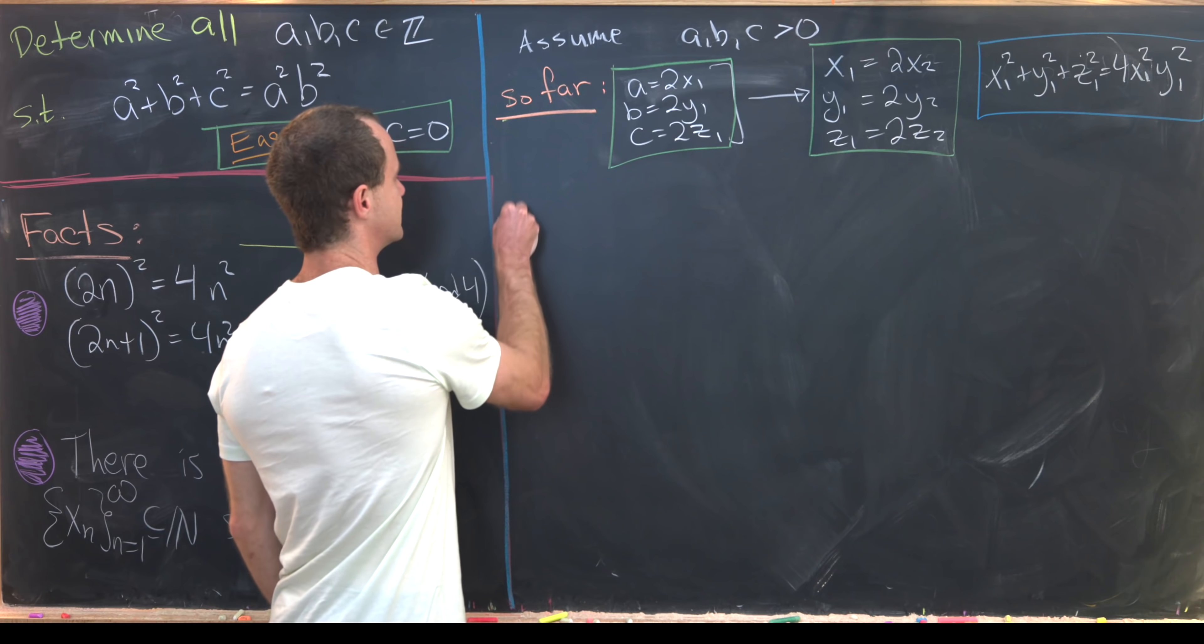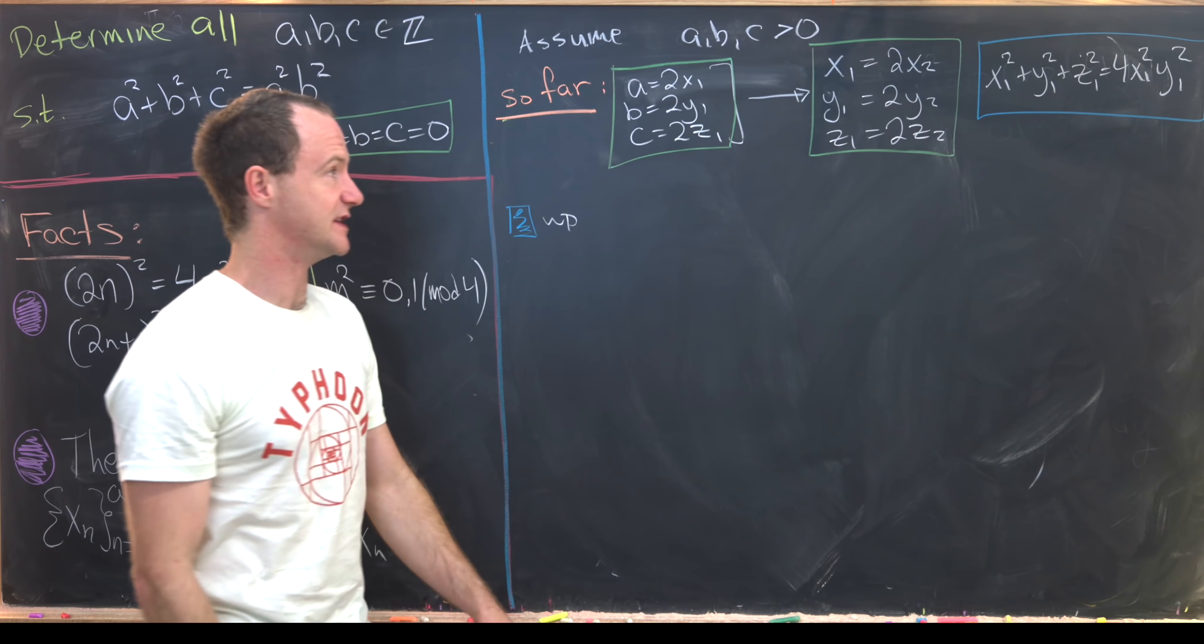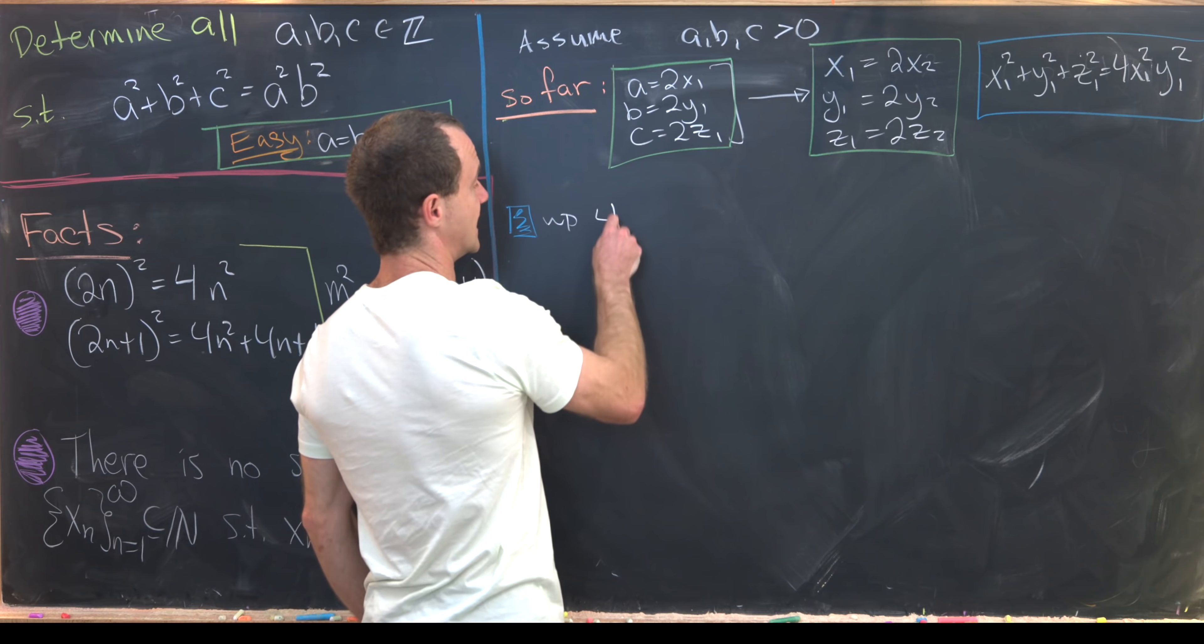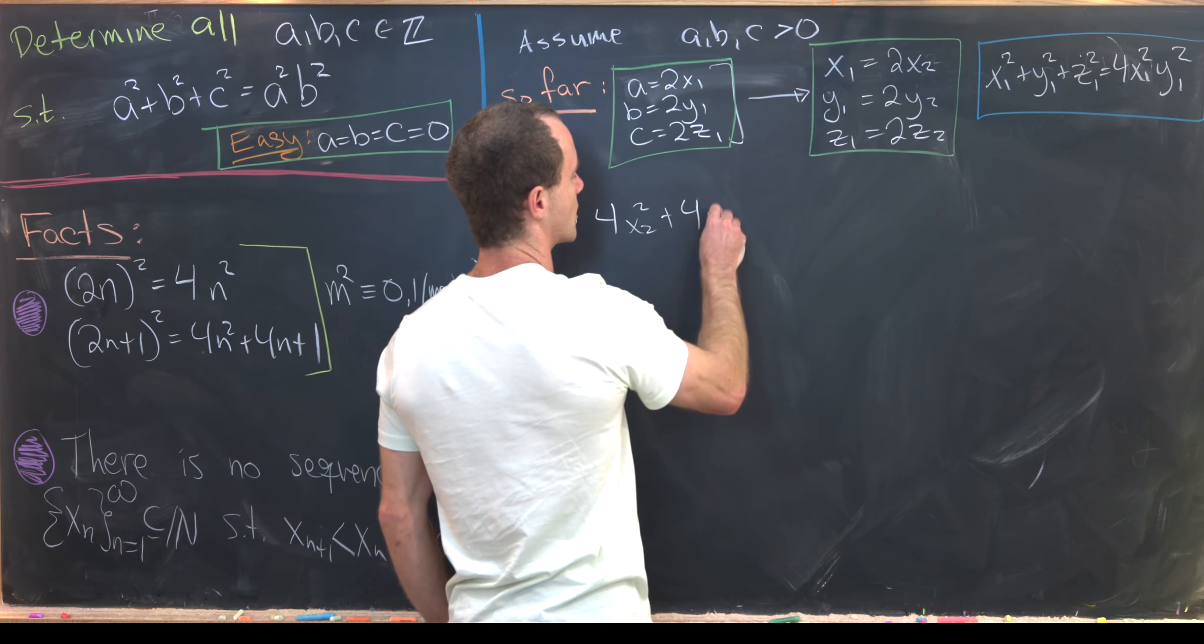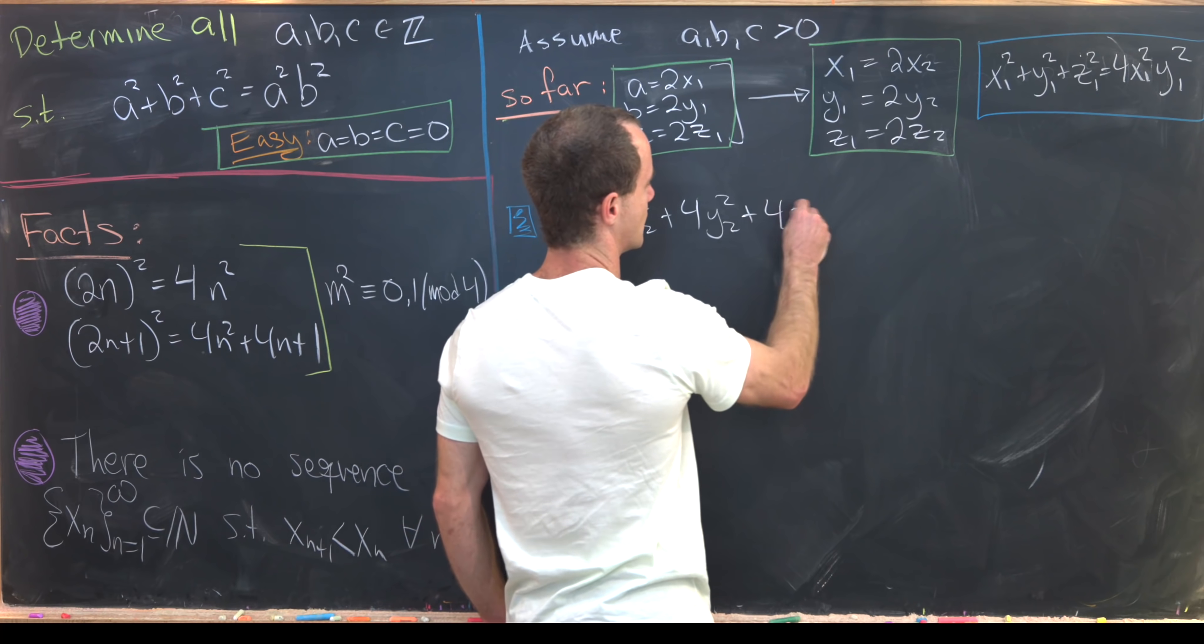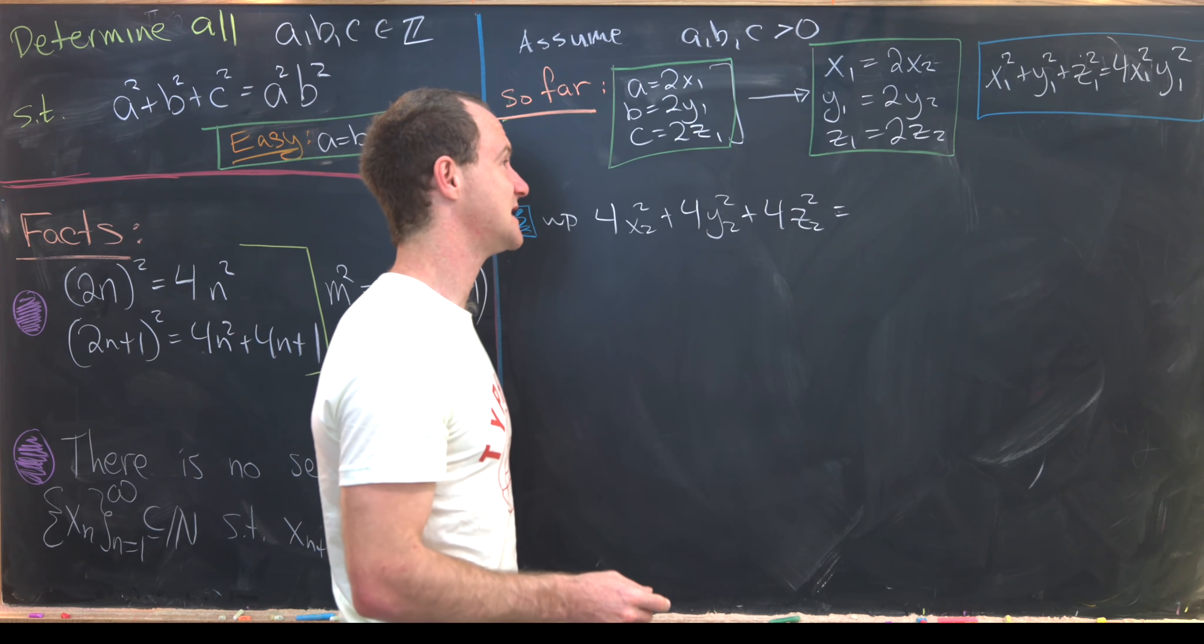So let's see what this blue box equation looks like with our substitution in terms of x₂, y₂, and z₂. So we've got 4x₂² + 4y₂² + 4z₂² = ... so that's going to be 16 from the x₁, y₁ squared, and then another 4, so that'll be 64x₂²y₂².